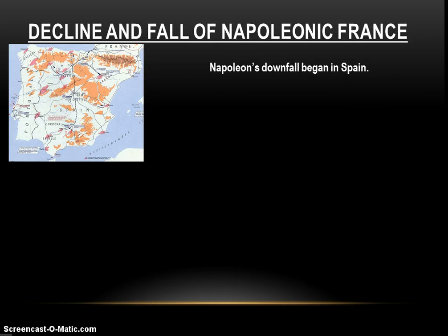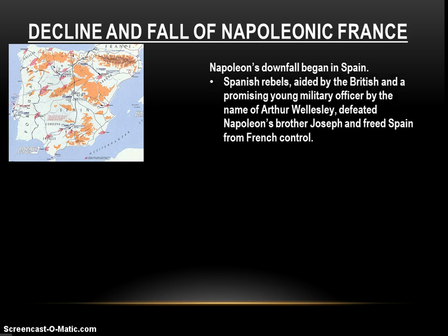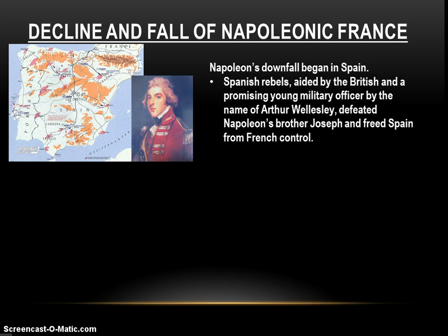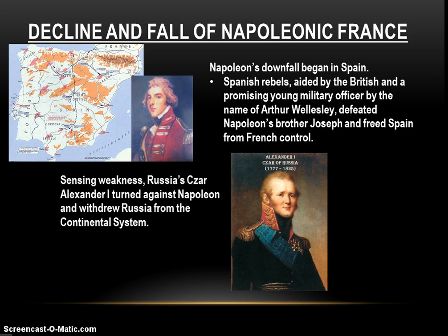Napoleon's downfall really began in Spain. Some years earlier, Napoleon had conquered Spain and put his brother Joseph on the throne. Spanish rebels, aided by the British and a promising young military officer named Arthur Wellesley, defeated Napoleon's brother Joseph and freed Spain from French control. Now people smelled blood in the water and sensed weakness. Russia's Czar Alexander I, supposedly an ally of Napoleon — only allied because Napoleon had crushed the Russian armies in 1807, making it safer to be his friend than his enemy — now turned against him, withdrew Russia from the Continental System, and declared themselves an ally of Britain and an enemy of France.